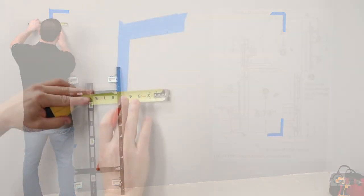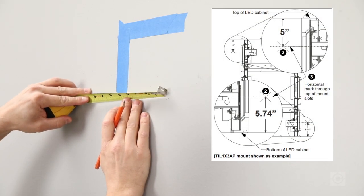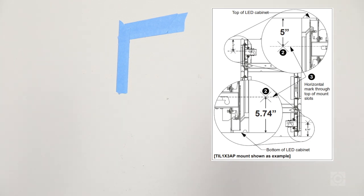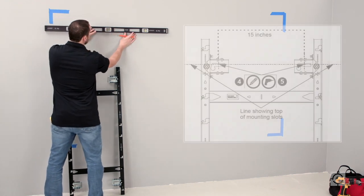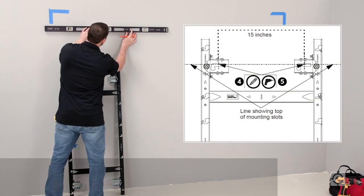Use the measurements from the instruction manual to determine the location for the first mounting point on the column that you intend to start on. Then draw a level line and reference the manual for the distance to the adjacent upper mounting point.